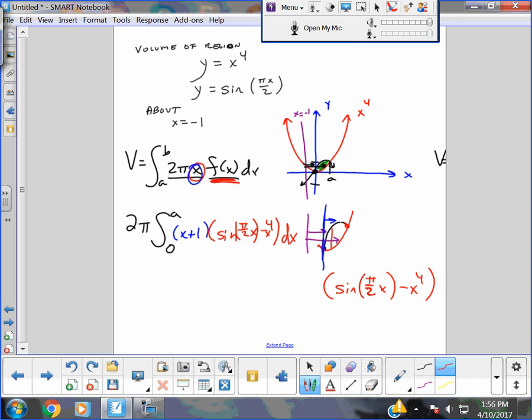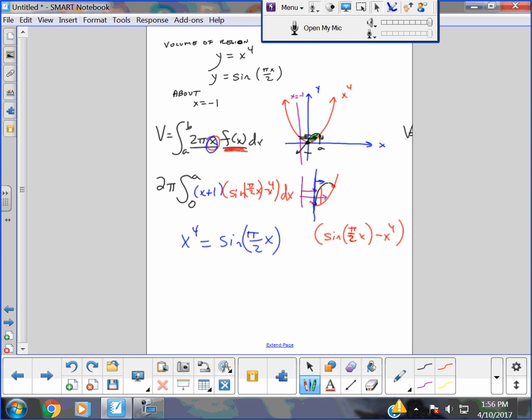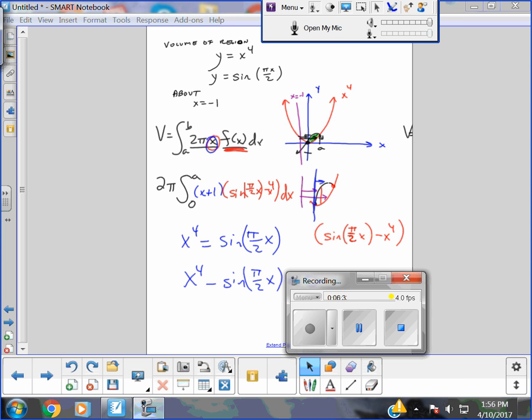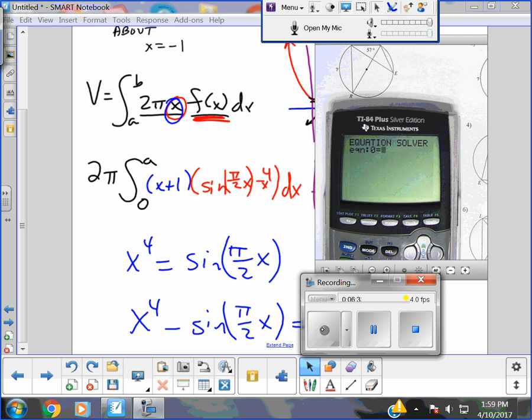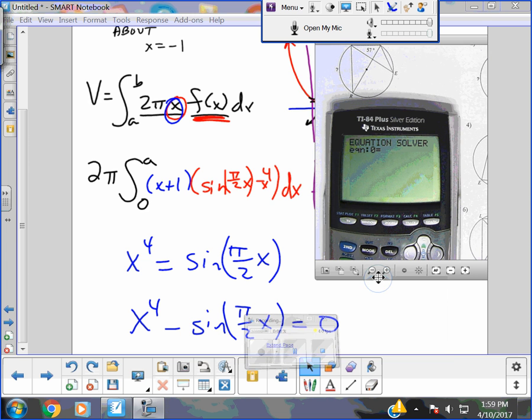Now what's the one thing we've got to do yet? We've got to find a. And I don't want to do this by hand. I know, though, that x to the 4th would equal sine pi over 2x. And so my calculator will do this. I would move it over here. It's that equal to 0. I'm going to pause the video and set up my calculator for this.